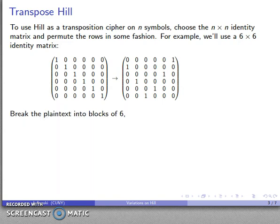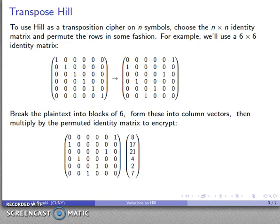I'm going to take the plain text, I'm going to break it into blocks of 6. Well, it is a plain text of length 6. There's my plain text. I'm going to form that into a column vector. I'm going to multiply on the left by the permuted identity matrix. And when I do that, I get my encrypted value where we see our symbols have been rearranged in some fashion.